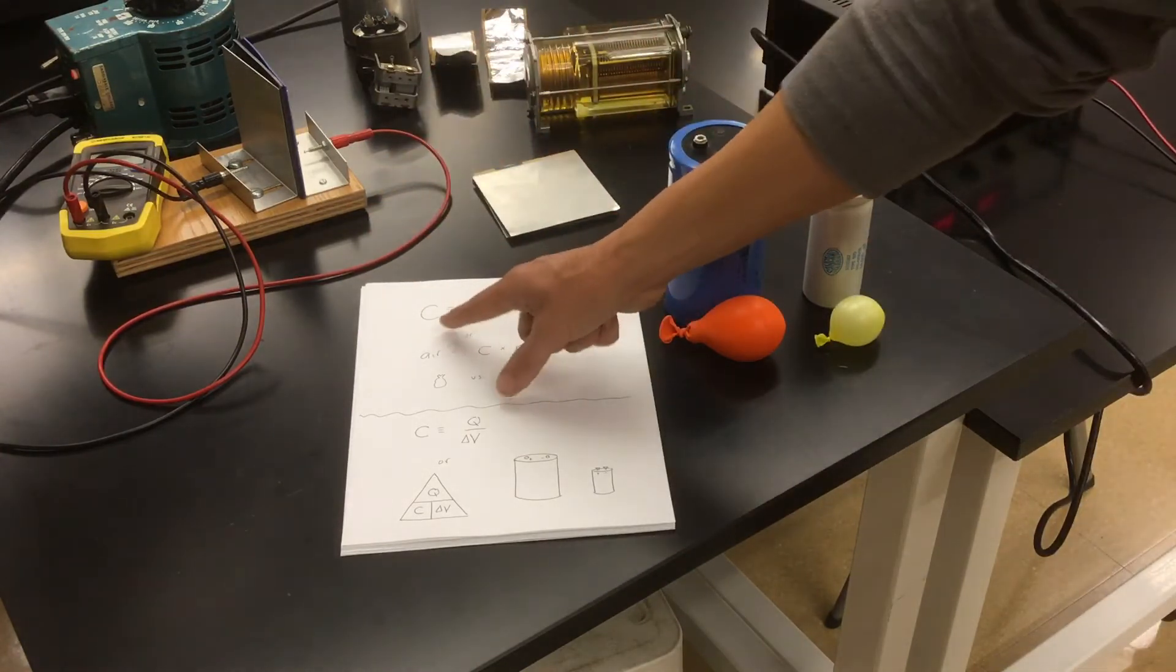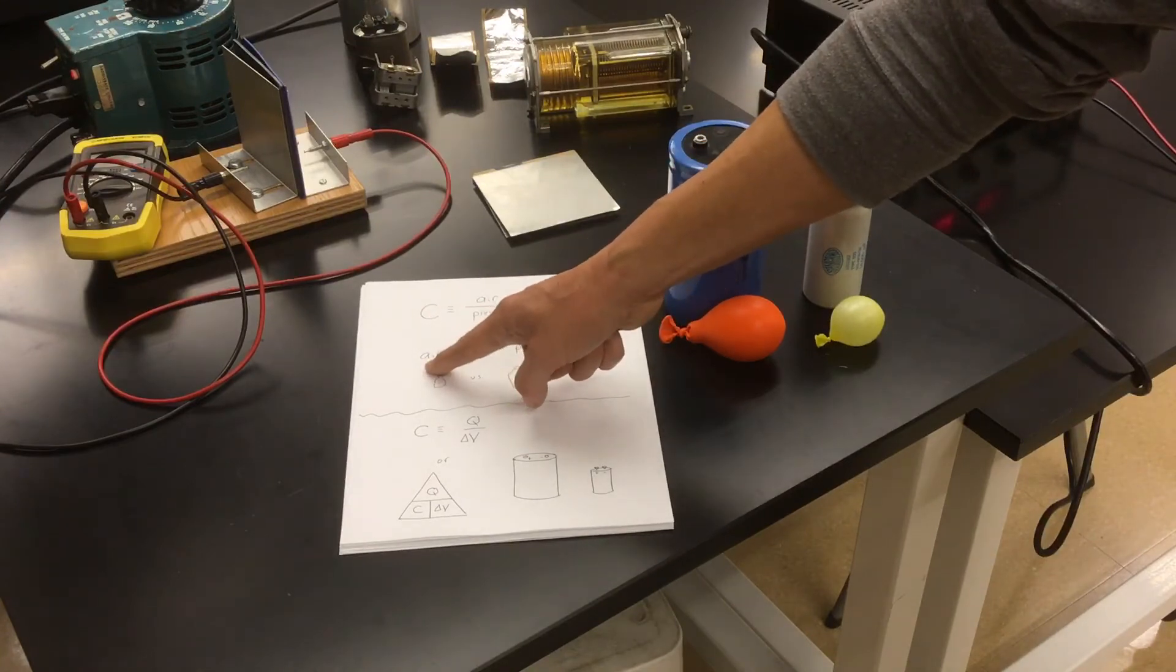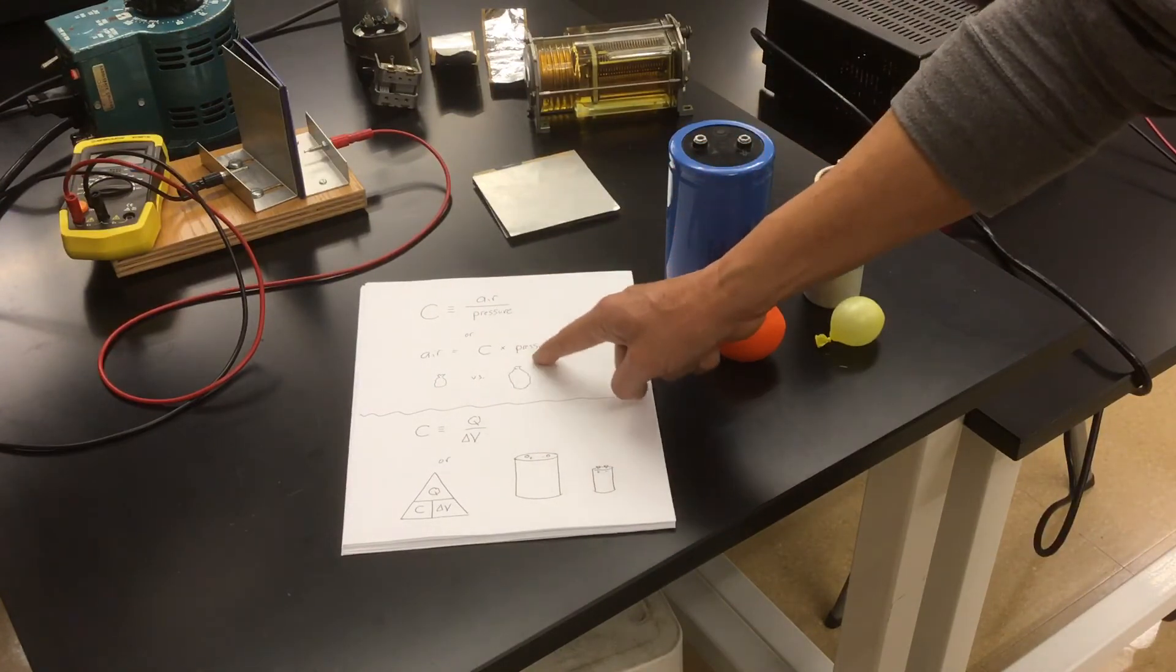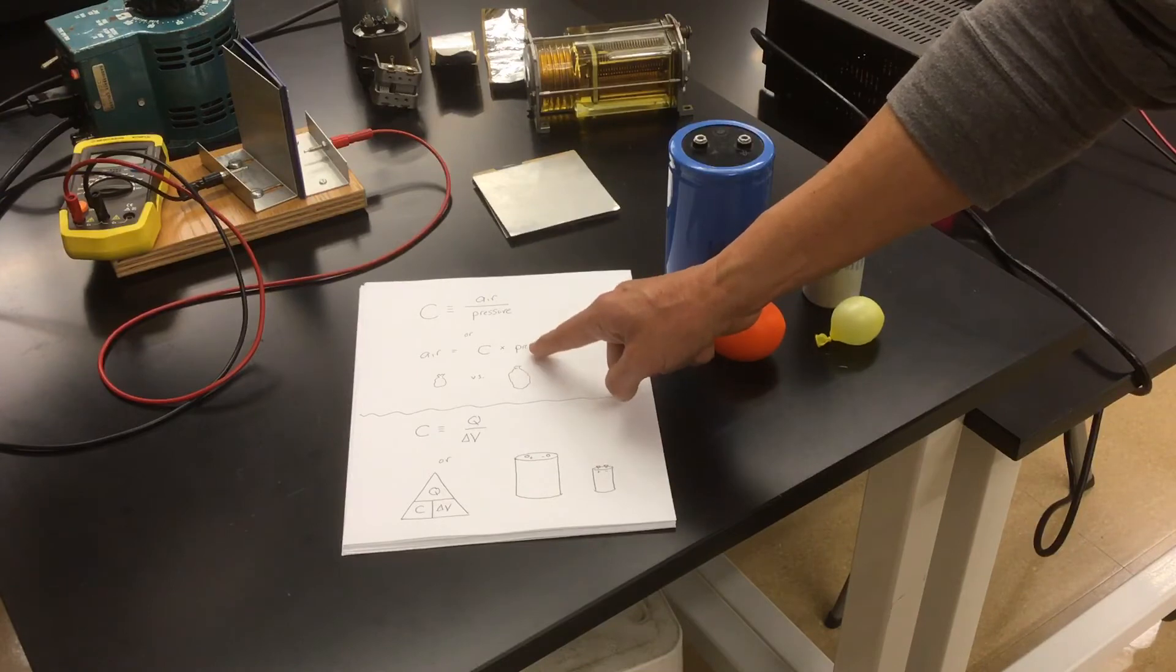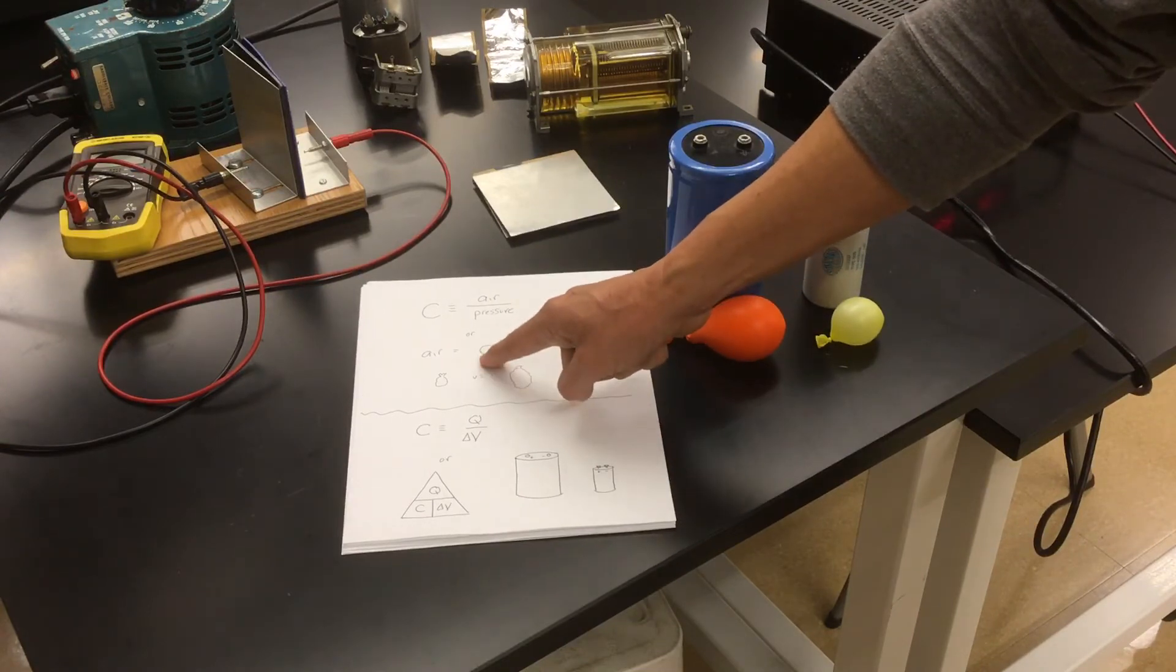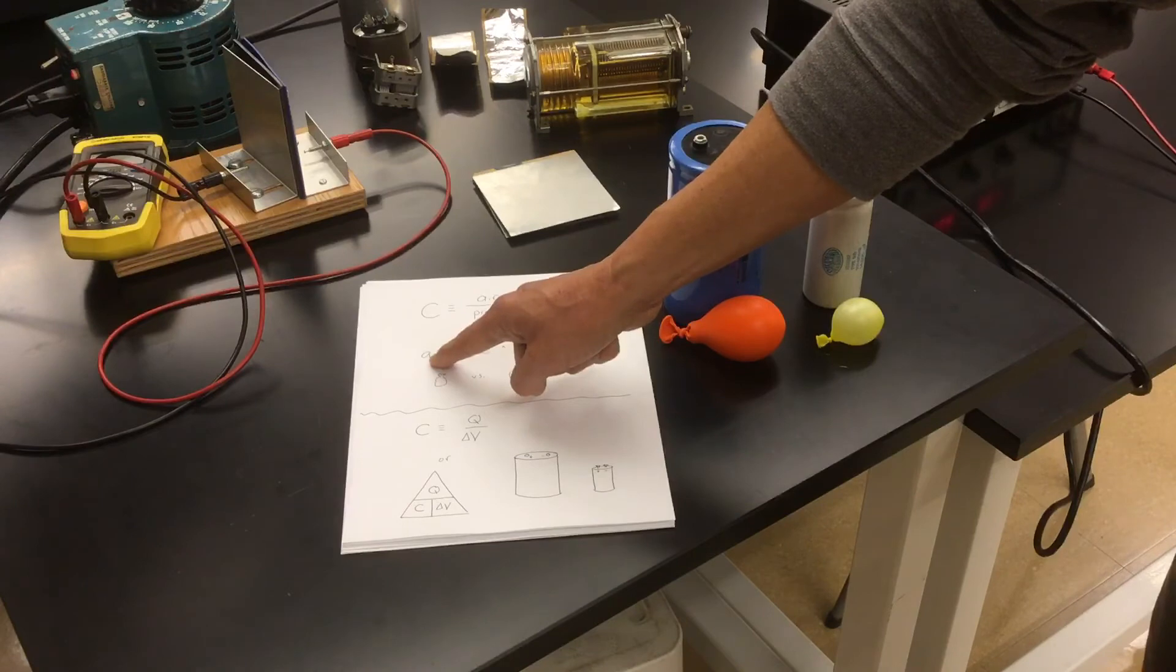Okay, we could rearrange this equation. Say the amount of air we hold is equal to its capacitance times the amount of pressure. So like I say, if I applied the same pressure to both, but one of them has a greater capacitance, then it'll hold more air.